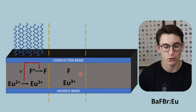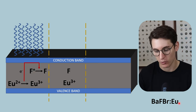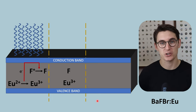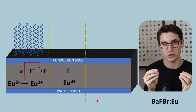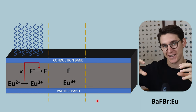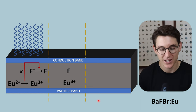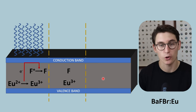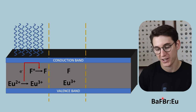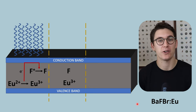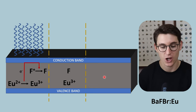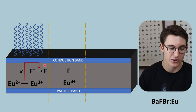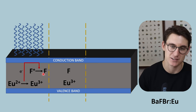The barium fluorobromide is doped by what is known as europium. When we looked at screen film radiographs, the silver halide crystals were doped by silver sulfide, which disrupted those crystals. The same thing happens here — when we introduce europium into the barium fluorobromide crystals we disrupt the structural integrity of those crystals and create what are known as F-centers.